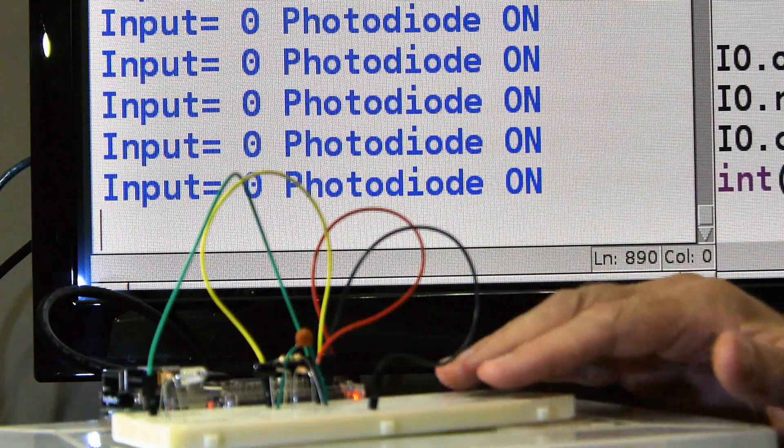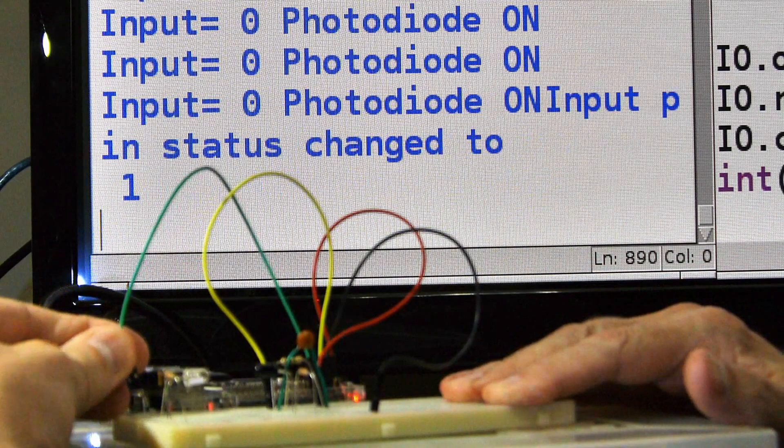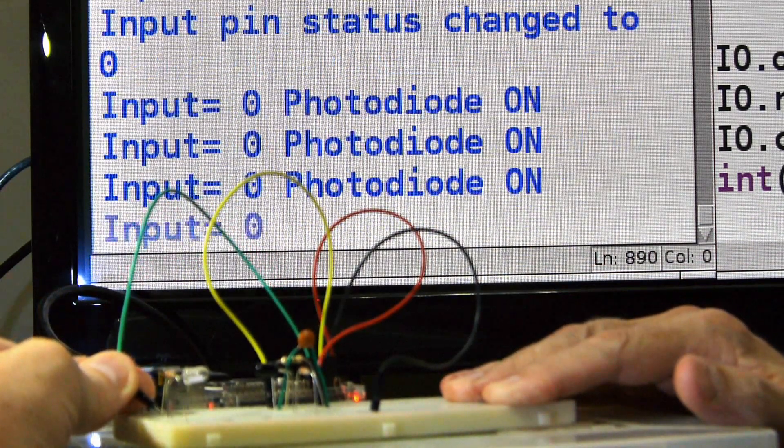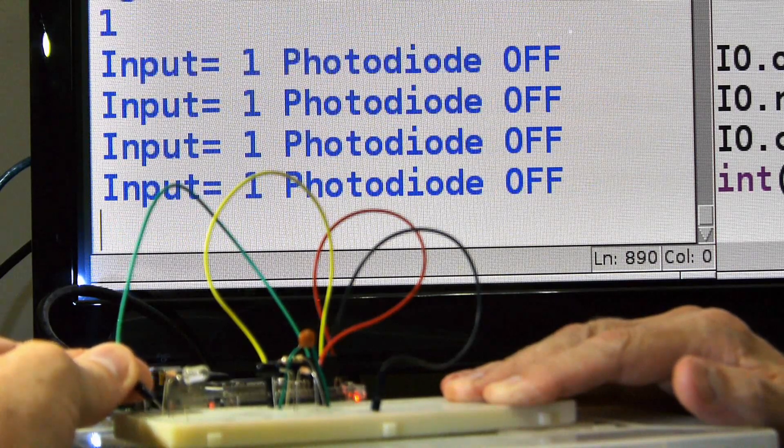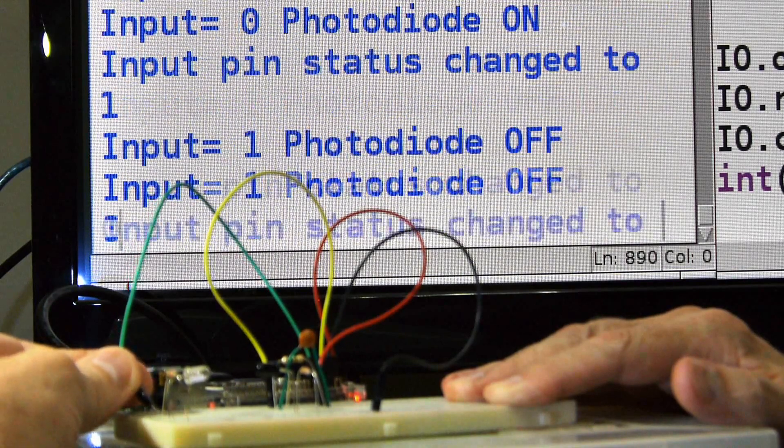Let's look at something else quickly we can do with this. We can detect if the LED is on. There, I unplugged it so the power is off to it. Now I'm touching it again. Photodiode is on. Photodiode is off. So I could use this to detect whether a light is turned on or not.